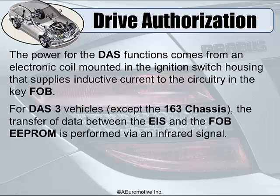For DOS 3 vehicles except for the 163, the transfer of data between the EIS and the key fob EEPROM is performed via an infrared signal. The hardware is the EIS into which a programmed key is inserted, but the key is not a key in the traditional sense — it's more like a plastic puzzle piece which fits into a socket in the dashboard. The key has a sequential code which rolls on each time it's used so the car cannot be stolen.